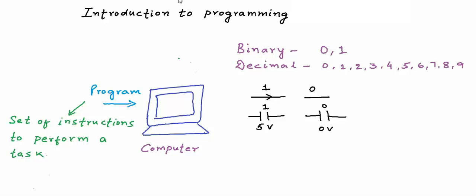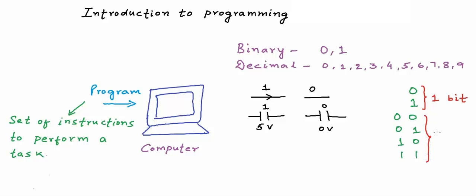If we use only one wire or one capacitor, we can signal or store only two possible values: 0 and 1. But if we use two wires or capacitors together, we can signal or store four possible combinations in binary: 00, 01, 10, and 11. A binary digit is also called a bit. If you have only one bit, you can have two possible values, and if you have two bits, you can have four possible values. Each bit can either be 0 or 1. 1 is also called a set bit and 0 is also called an unset bit.